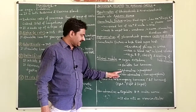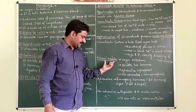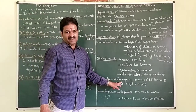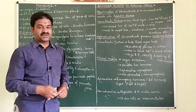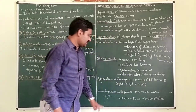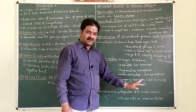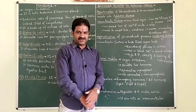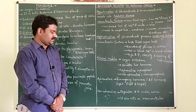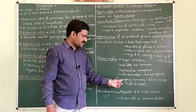Both adrenaline and noradrenaline are hormones of the adrenal medulla. Adrenaline is called the emergency hormone because it is secreted in emergency conditions. It is also called the 3F hormone — three factor hormone — because it is secreted during fight, flight, and fright conditions.